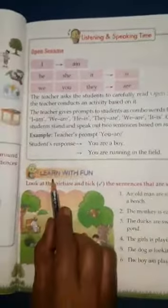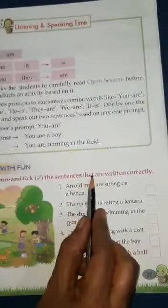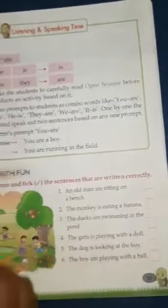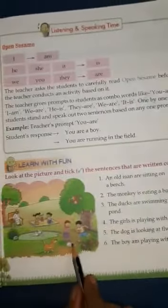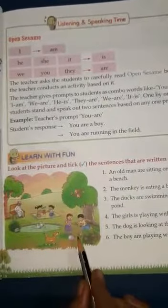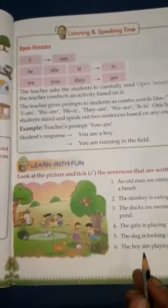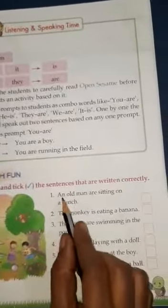Now, next one — Learn with Fun. Look at the picture and tick the sentences that are written correctly. One picture is here and some sentences are given related to the picture. If the sentence is correct, we have to put a tick mark on it. So let us read. Number one.